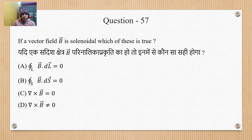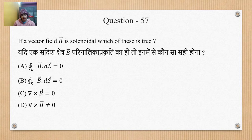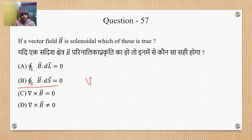Question 57: If a vector field B is solenoidal, which statement is true? A solenoidal field means the net flux is zero — neither gain nor loss — so the divergence is zero. We can write this as the surface integral ∮B·ds = 0, or in differential form as ∇·B = 0 (divergence B = 0). This is the correct option.